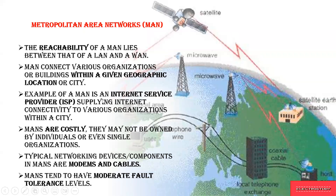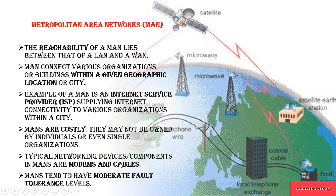One example of a Metropolitan Area Network is internet service providers, which access satellites to provide internet connectivity to various organizations within their range of location. Setting up a MAN is costly and cannot be owned by an individual — unlike PANs, which are owned by individuals. MAN can only be owned by an organization. It uses modems and cables to connect each node, and it has moderate fault-tolerant levels, unlike LAN which has high fault tolerance.